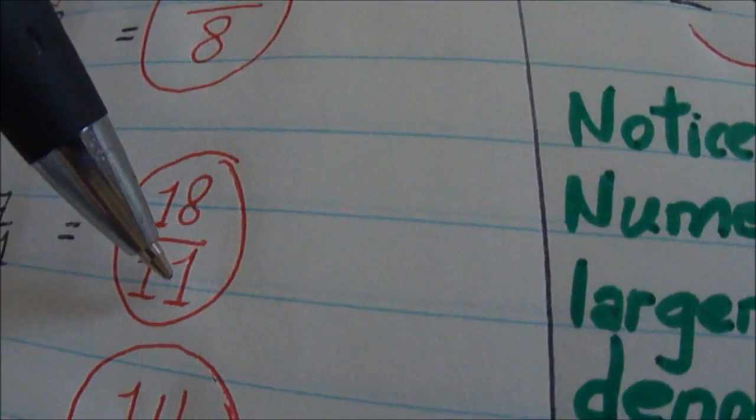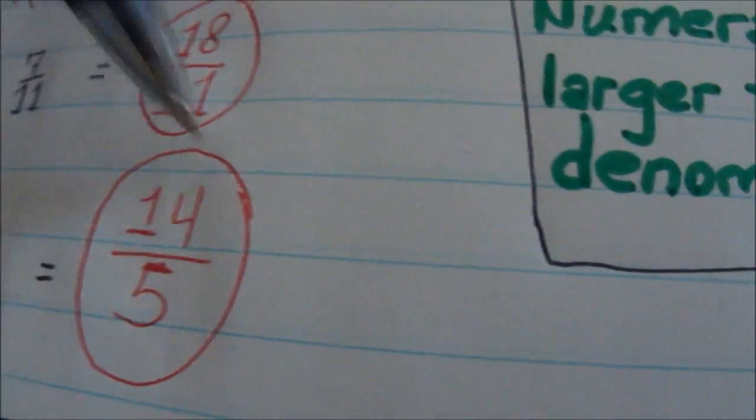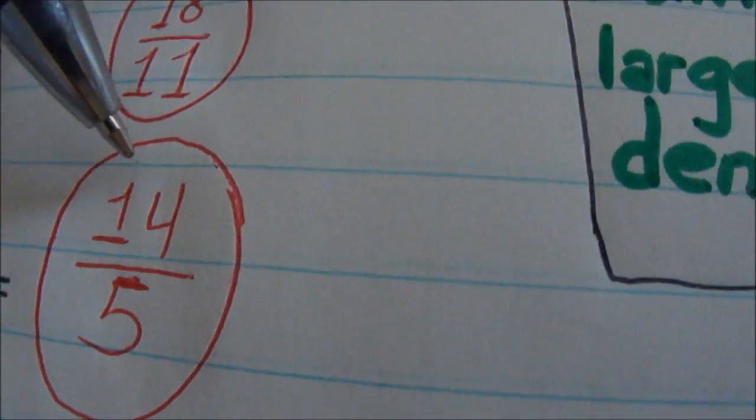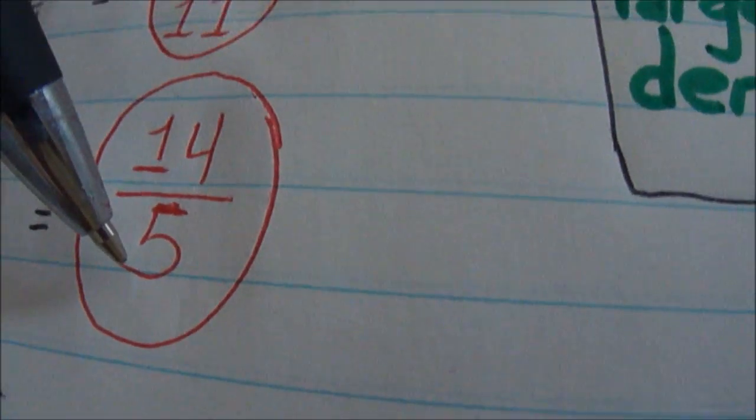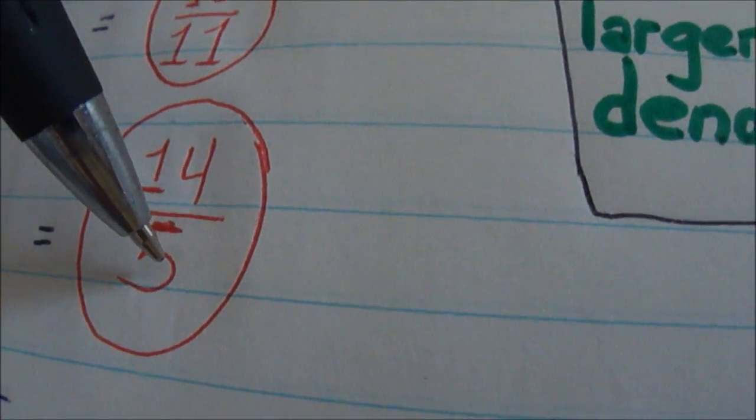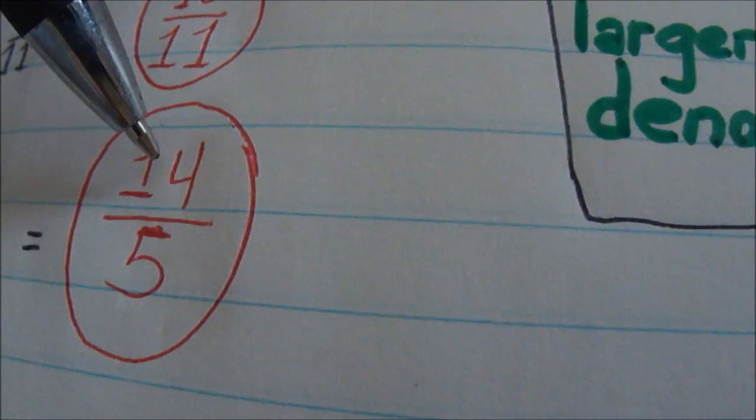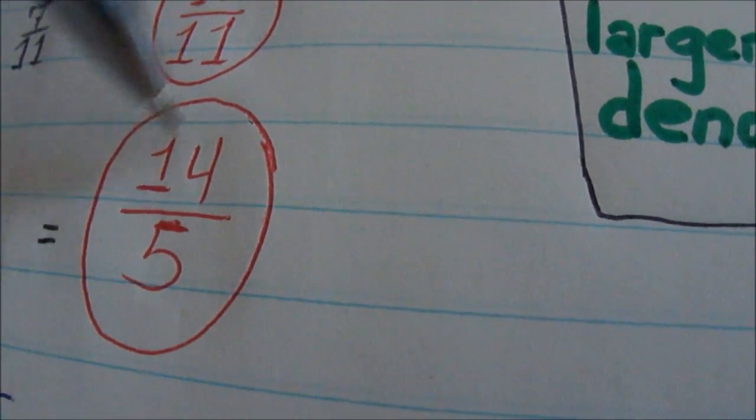Numerators larger, denominators smaller. Another improper fraction right here. 14 is larger, 5 is smaller. Denominator is 5, and the numerator is 14. So the numerator is larger. This makes it an improper fraction.